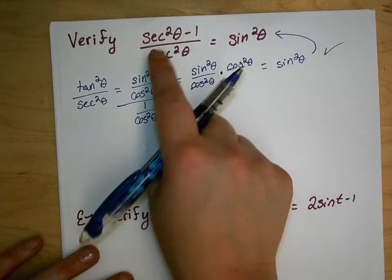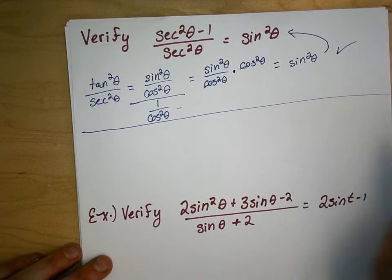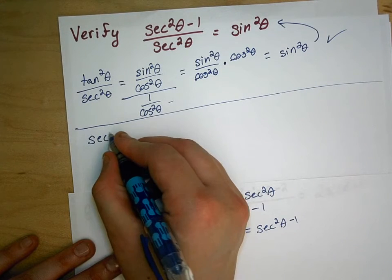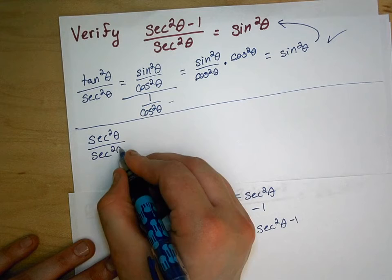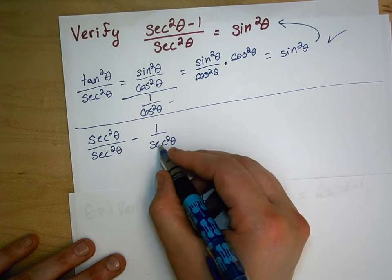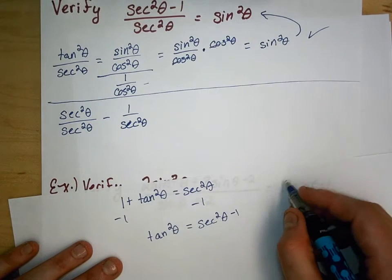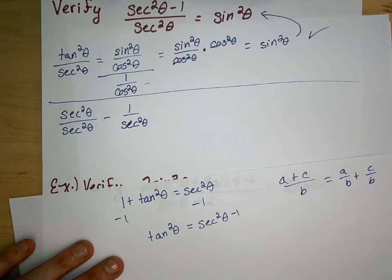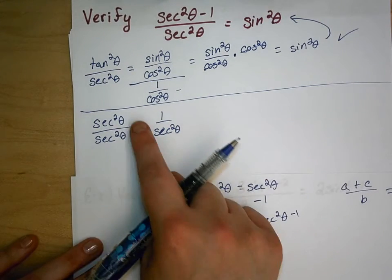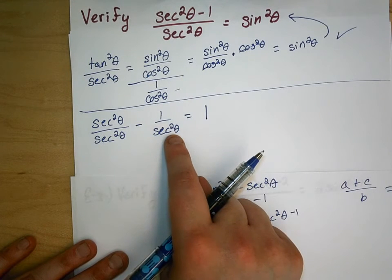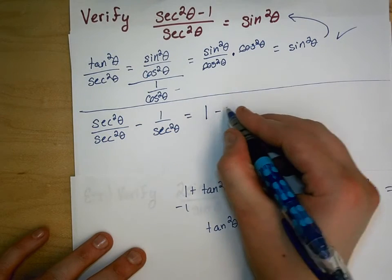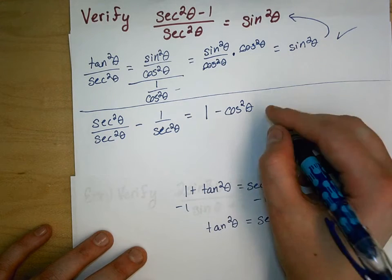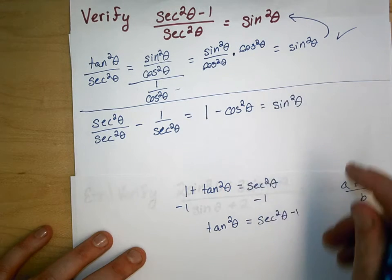Before moving on, let's try doing that one a different way. We could have broken the fraction apart — rewrite it as secant squared theta over secant squared theta minus 1 over secant squared theta. This is just a common rule we can do with fractions: a plus c over b equals a over b plus c over b. Then the first term becomes 1, and 1 over secant squared theta by the reciprocal identity equals cosine squared theta. By the Pythagorean identity, subtracting cosine squared theta gives sine squared theta — multiple ways to do these.